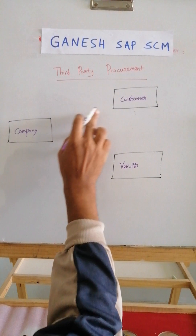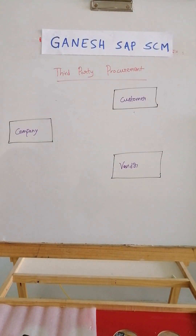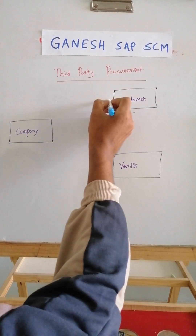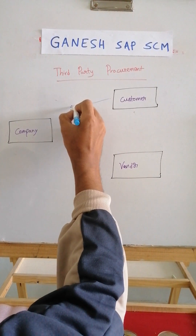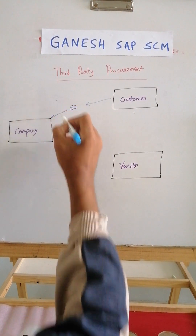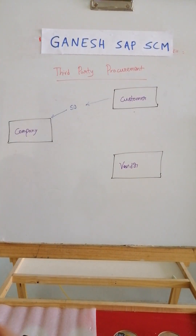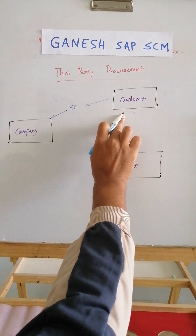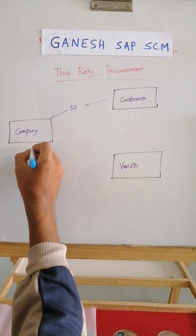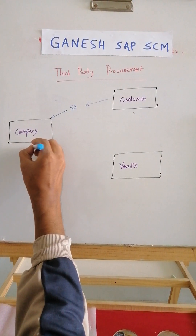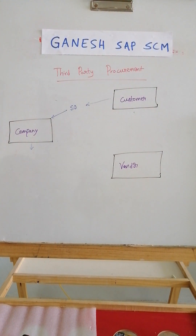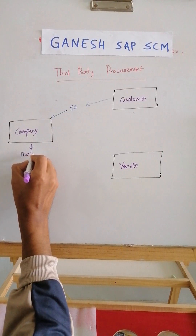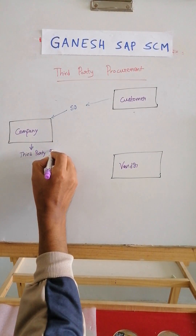First, a sales order will be created between the customer and the company based on the customer's requirement. This is called a third-party sales order — a separate delivery type and sales order type are available for third party. Once the sales order is created by the company based on the customer requirement, the system will automatically create a third-party purchase requisition.